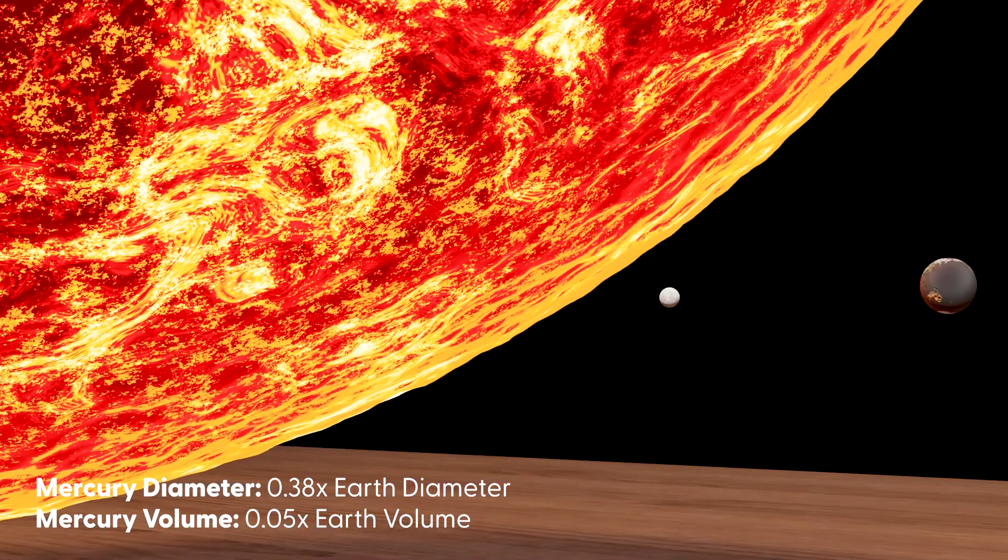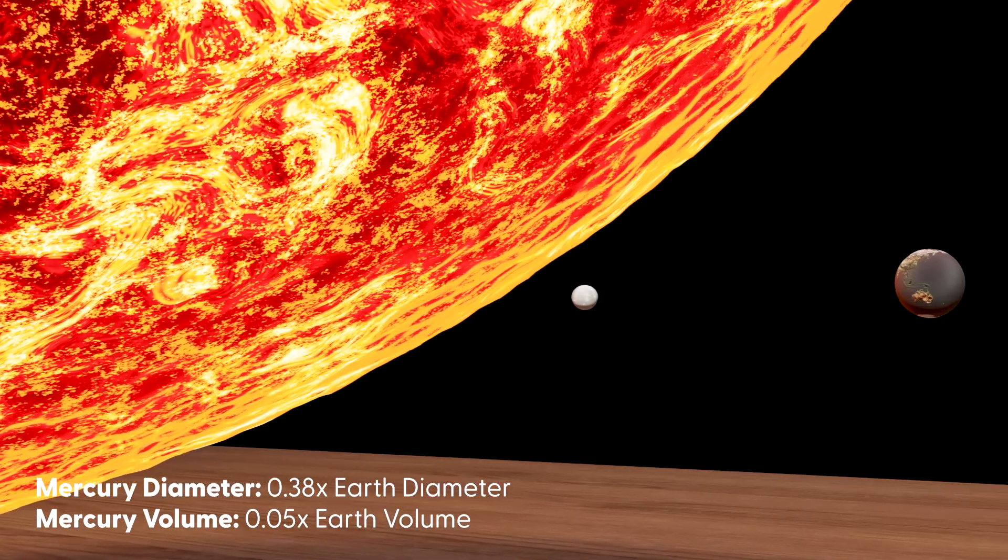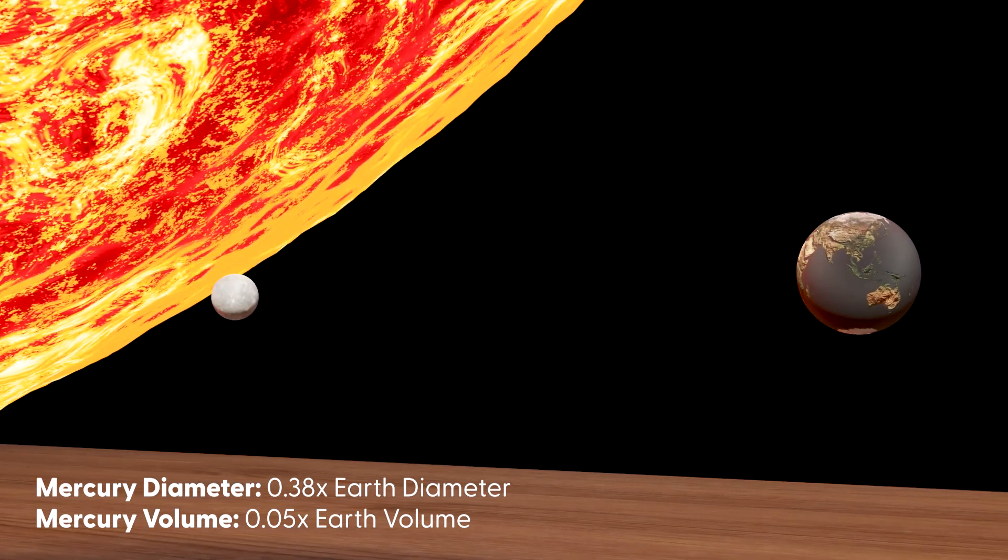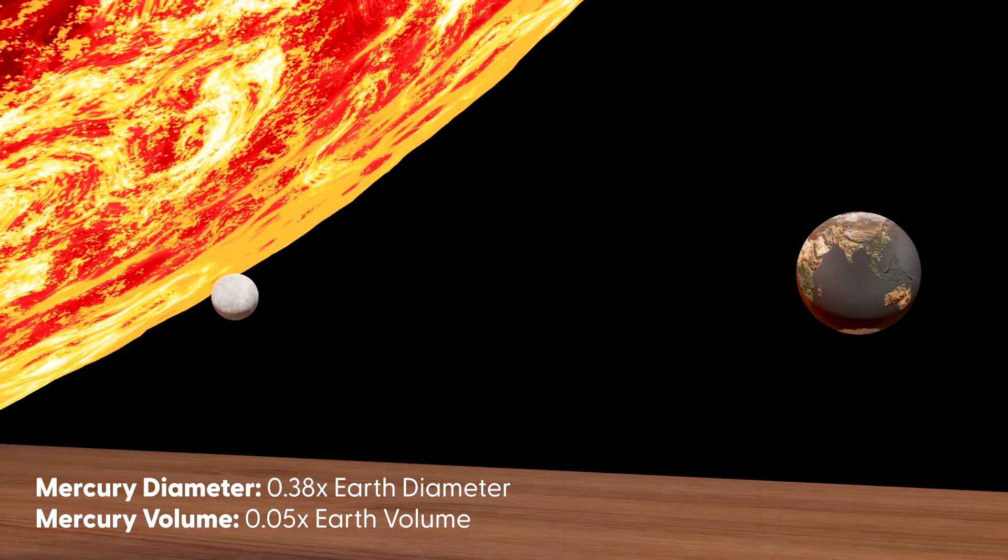Mercury is much smaller. With only 0.38 times Earth's diameter and 0.05 times Earth's volume, it could fit 19 times inside of Earth.